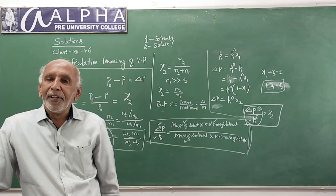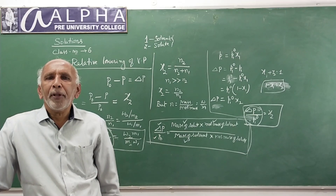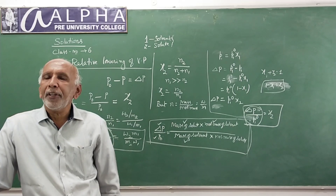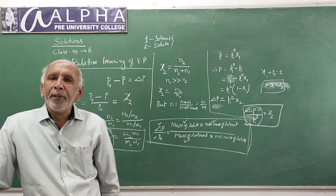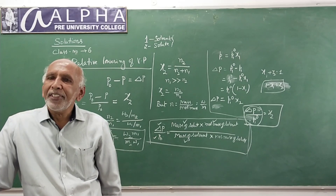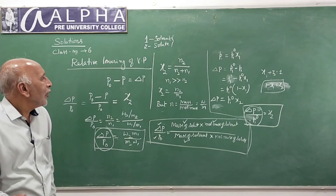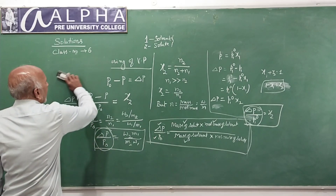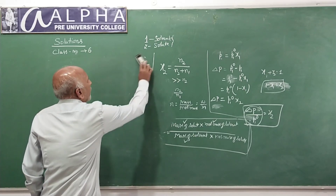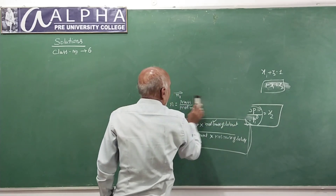The important application of the study of relative lowering of vapor pressure is to determine the molar mass of the dissolved substance, that is, the solute. Now let us consider the next colligative property: osmotic pressure.